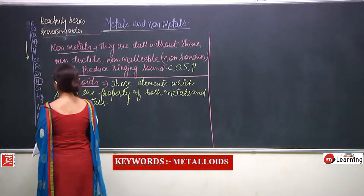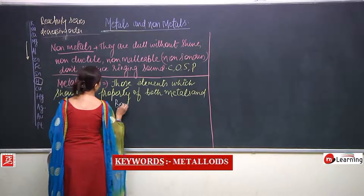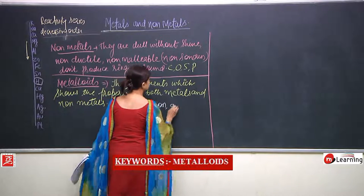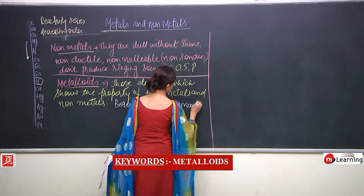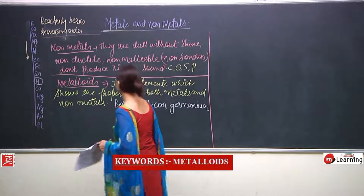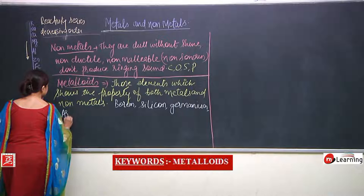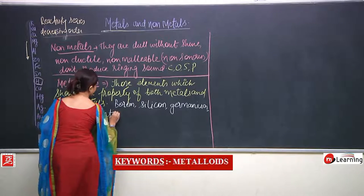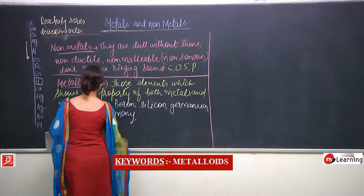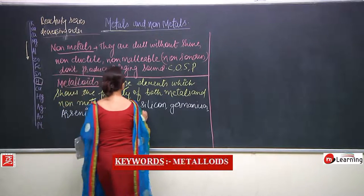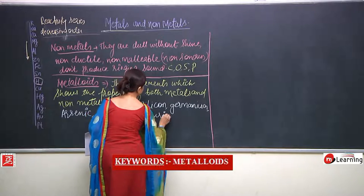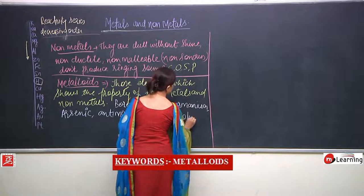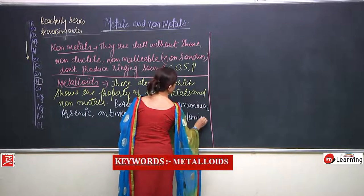Examples of metalloids are: boron, silicon, germanium, arsenic, antimony, tellurium, and even polonium.